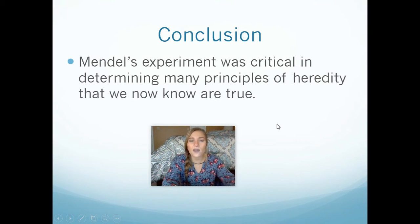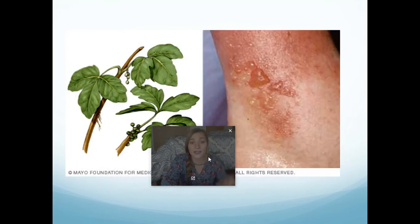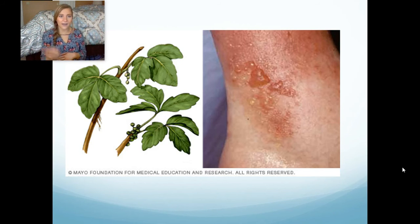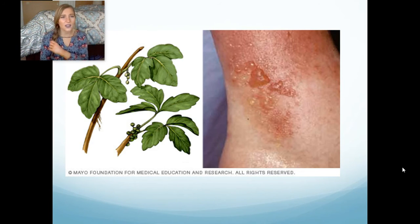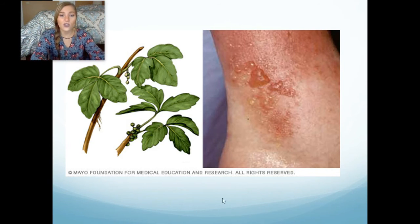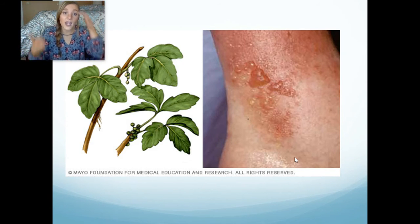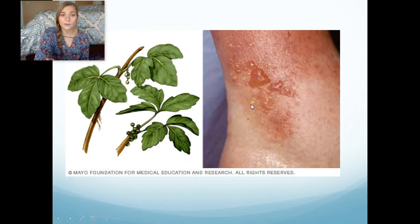So now we know that many things are true based on these experiments. For example, being allergic to poison ivy — are you allergic to poison ivy? I am; I've had it so bad so many times in my life. That's a genetic trait. Some people are not prone to responding to poison ivy. So you could have the genotype that means you have the alleles to be allergic to it, and your phenotype would be that this happens to you when you come in contact with poison ivy.